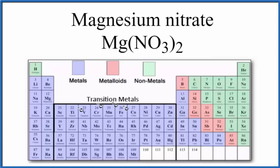So if we look at the periodic table, we have magnesium here, Mg. That is a metal. And then nitrogen and oxygen, those are nonmetals. When we have a metal bonded to nonmetals, that's an ionic compound. So Mg(NO3)2, magnesium nitrate, that's an ionic compound.